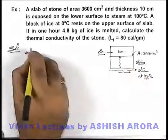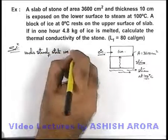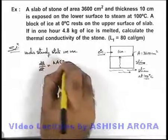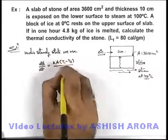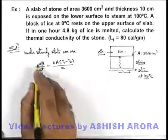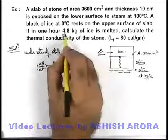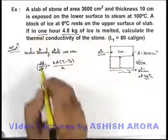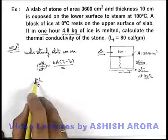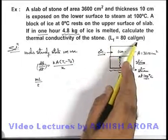So we can write, under steady state, we use the rate of heat conduction: dQ/dt is equal to k·A·(T1 minus T2) divided by x, where x is the distance through which the heat is being conducted. This dQ/dt can be directly written as the amount of heat which is supplied to melt 4.8 kilogram of ice in one hour. So dQ/dt can be written as m·L divided by t, where m is the mass of ice melted and L is the latent heat of fusion of ice, given as 80 calories per gram.